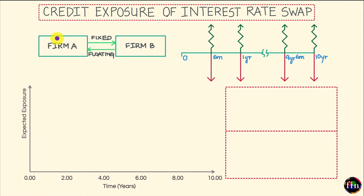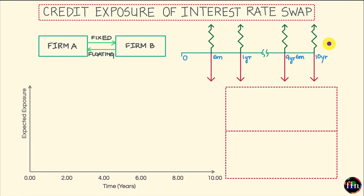Let's begin by taking the perspective of firm A, which has just now entered into a fixed-for-floating interest rate swap with firm B. In this interest rate swap, firm A will be periodically paying fixed and receiving floating. So from A's perspective, this is a payer interest rate swap. We have drawn out the cash flow diagram from firm A's perspective — firm A is receiving floating and paying fixed, with exchanges happening after every six months and a maturity of 10 years.